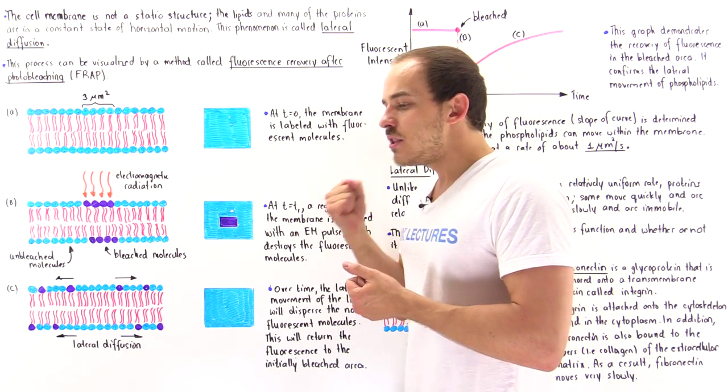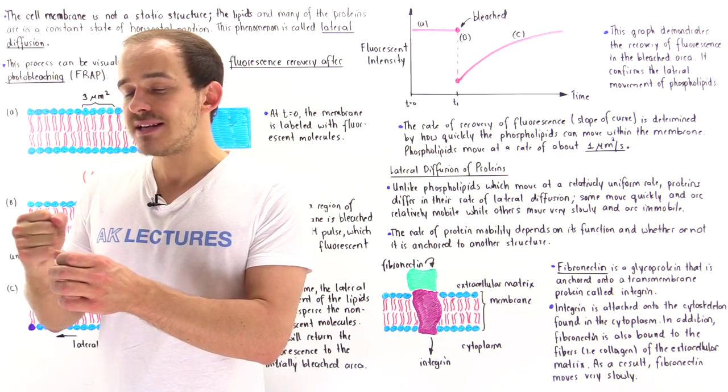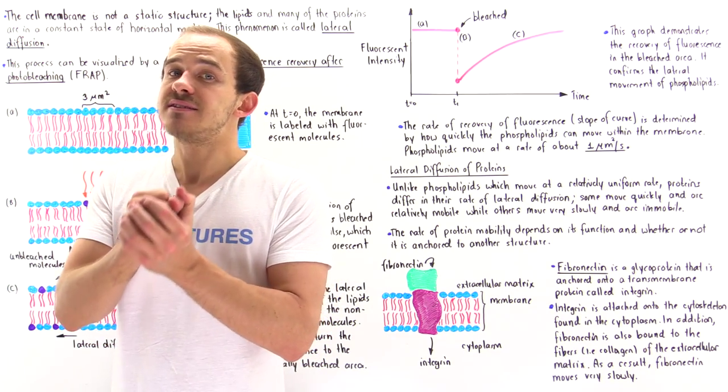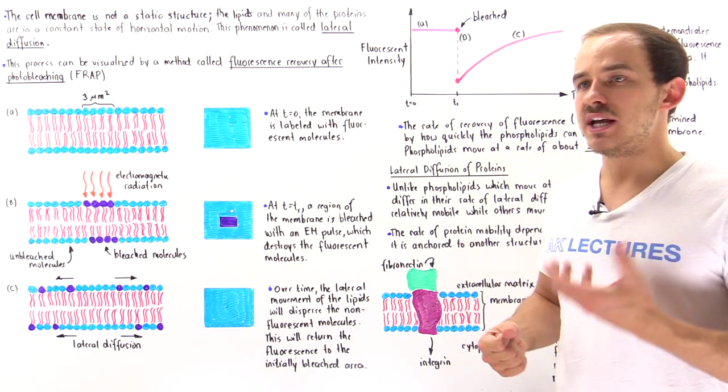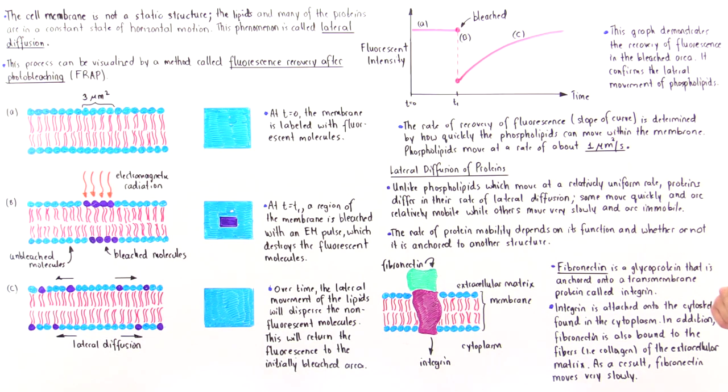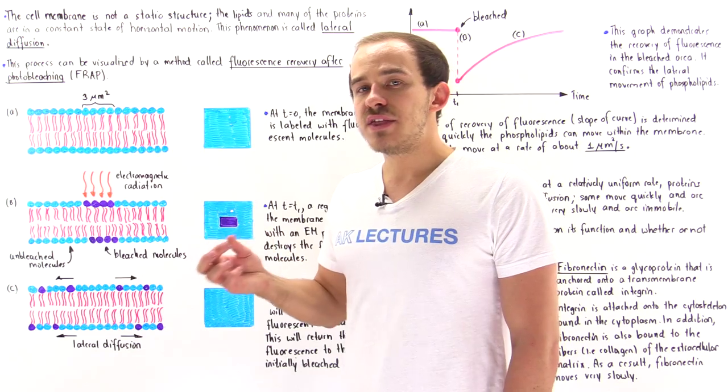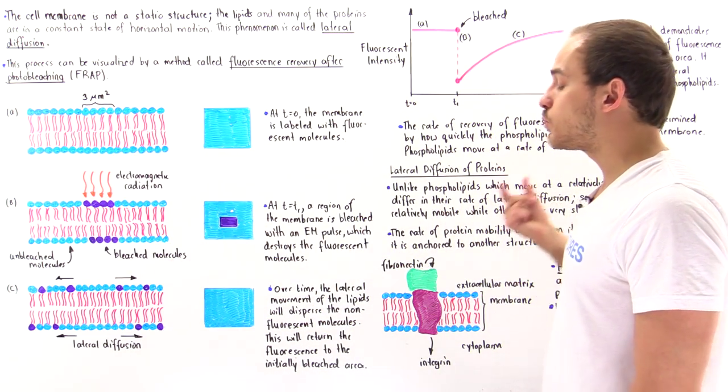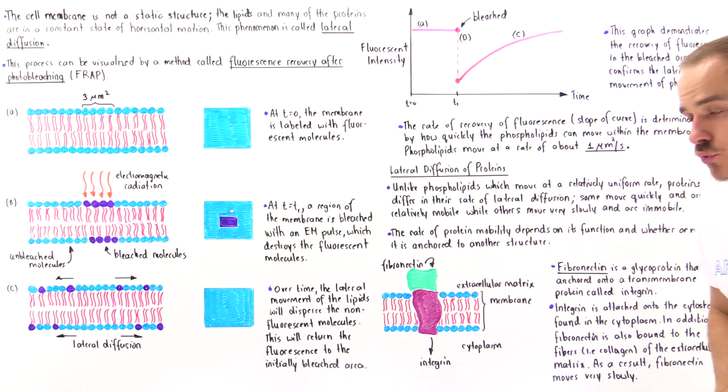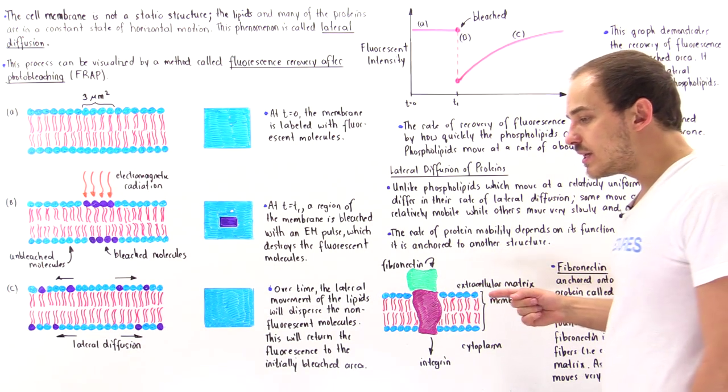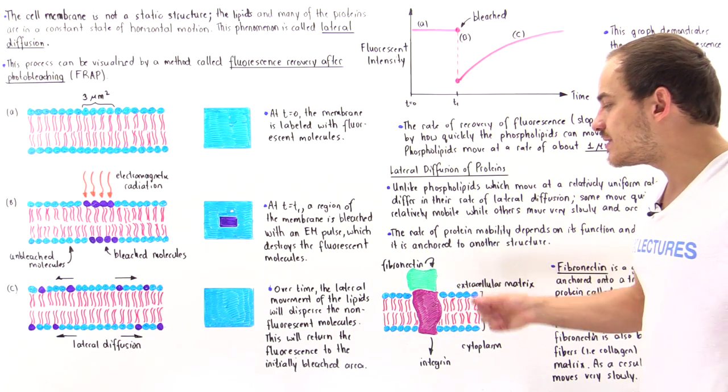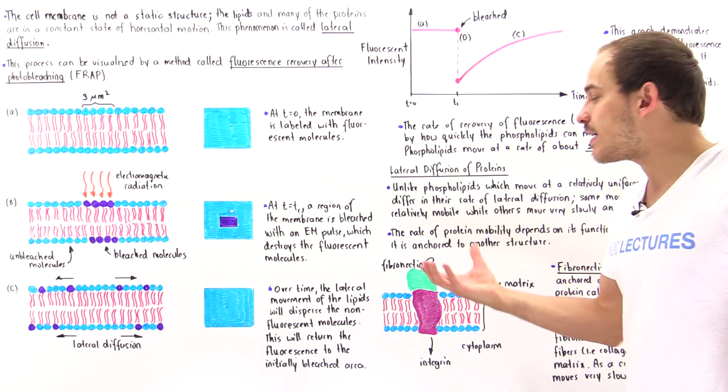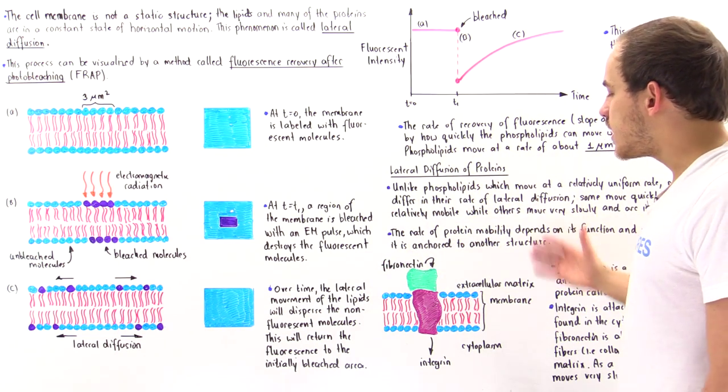On the other hand, other proteins, because their functionality depends on remaining in that single position, in these cases, proteins are relatively immobile. And one example is fibronectin. So, fibronectin is a peripheral glycoprotein that is actually attached onto a transmembrane protein, known as integrin. Now, fibronectin is not only anchored onto the integrin, but the fibronectin is actually itself anchored onto the collagen fibers found in the extracellular matrix.